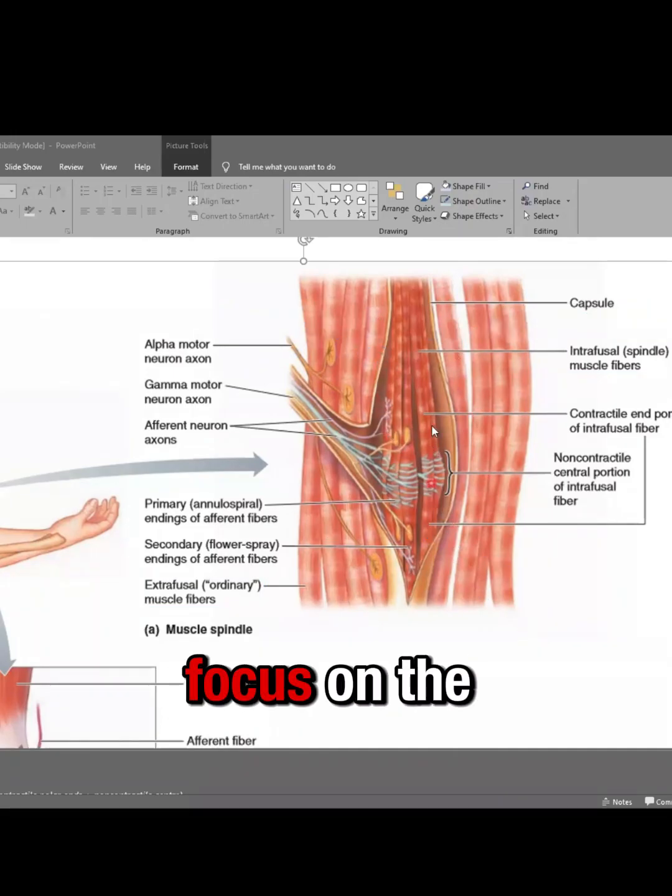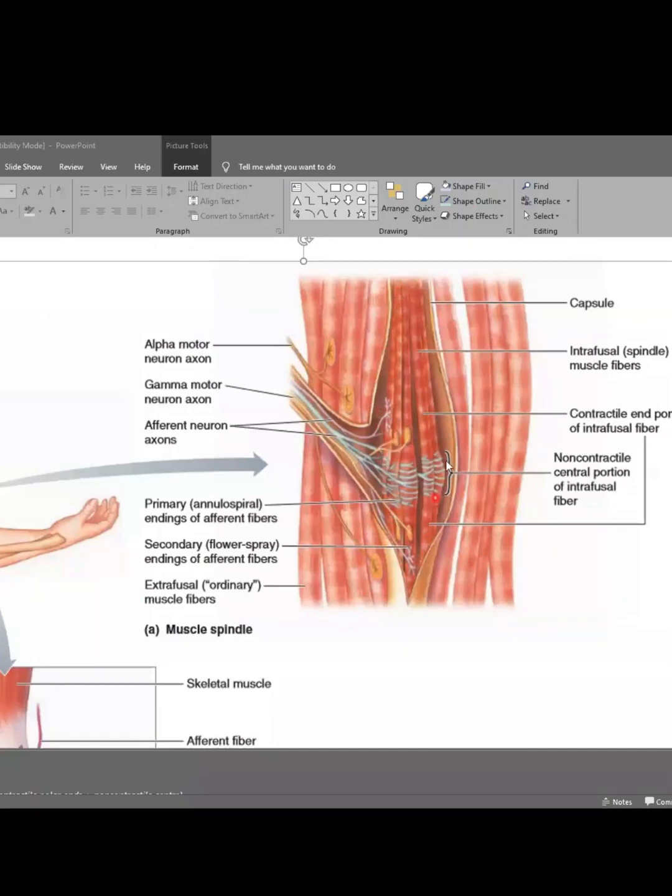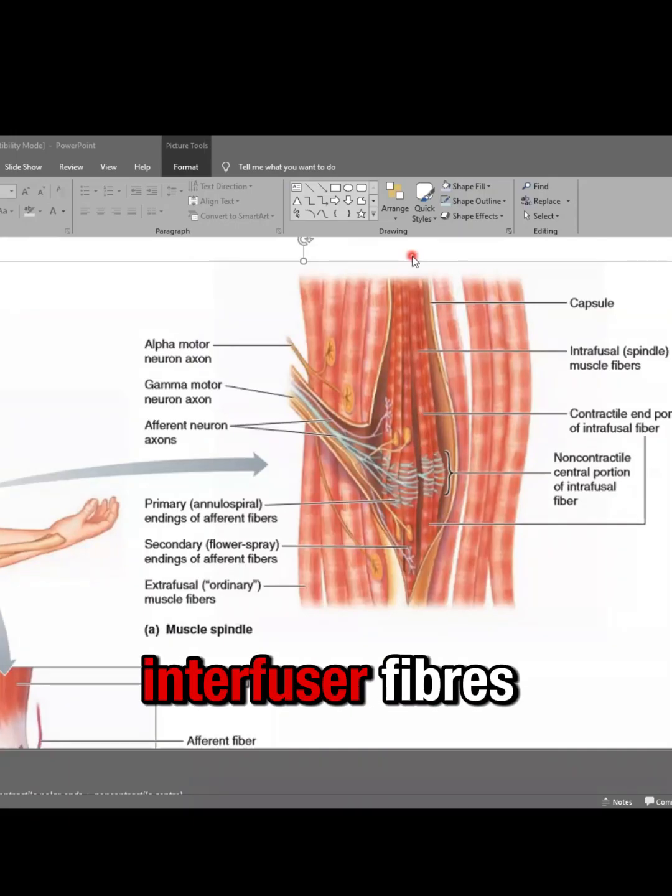Now let's just focus on the intrafusal fibers contained within the muscle spindle, the shape of these fibers. So there are two types of intrafusal fibers.